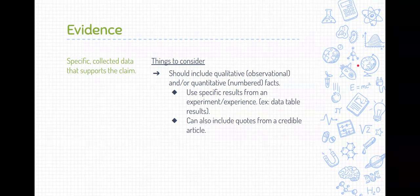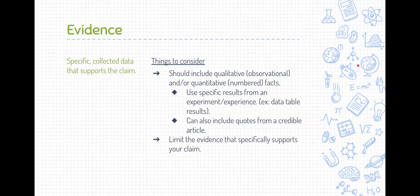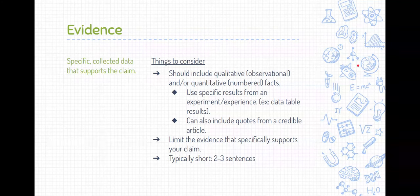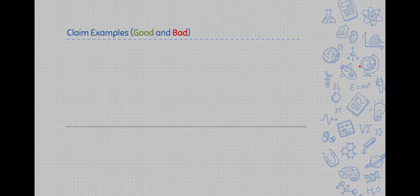Now, we could also include quotes from credible articles. Sometimes we might need to apply what we're learning to real life situations. So going out and researching other articles, we can include quotes from credible articles. Now, we should limit our evidence to those that specifically support the claim. A lot of times we collect evidence and we might collect way more evidence than we actually need. We're just going to list the evidence that specifically supports our claim. Now, this is typically short as well, probably two to three sentences. We're just listing evidence. We're not explaining the evidence. We're not really telling why or how it works. That will be in the next section when we talk about reasoning. So we're just providing the facts. We're not explaining them yet.